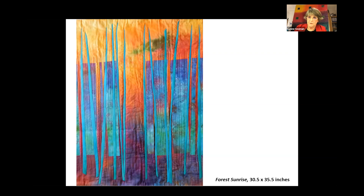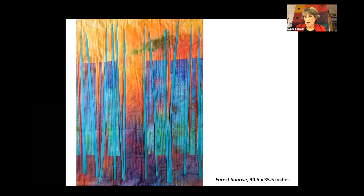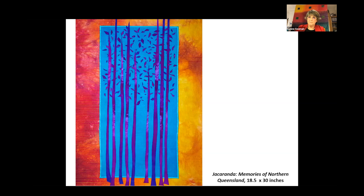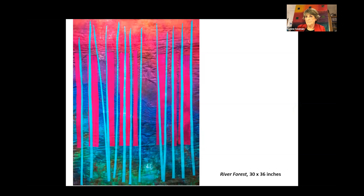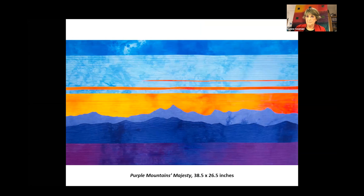This is Forest Sunrise, made for the Invitational Exhibition 75, a celebration of new work in fiber at the Dairy Arts Center in Boulder, Colorado, in 2017. My trees have now turned into sticks, abstracting the form of the trees. This is Jacaranda, memories of Northern Queensland — made in 2019, inspired by a trip to Australia two years previously. We spent a week in Port Douglas, Northern Queensland, seeing the Great Barrier Reef, the rainforest, and the Jacaranda trees, which were blooming there. This is River Forest 2019 — this was a commission, similar to Forest Sunrise, but with a sparkling, stitched river running through it.